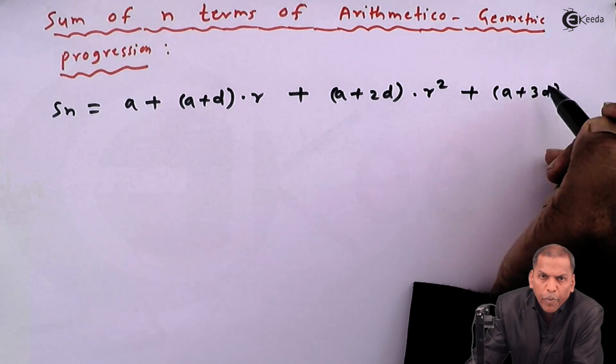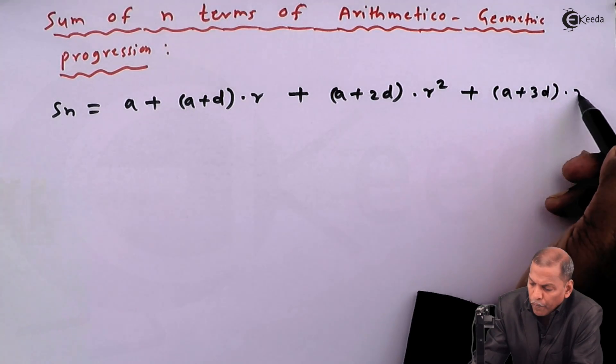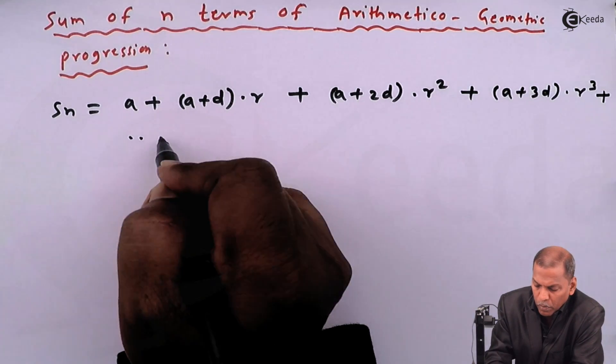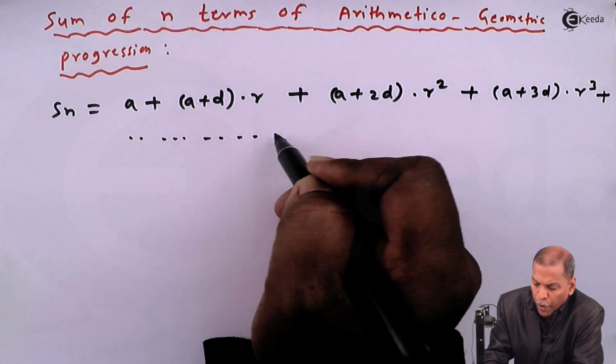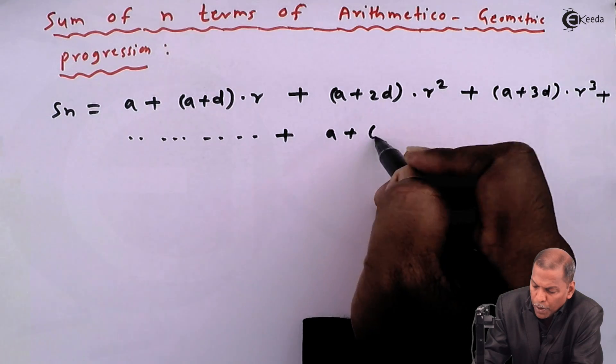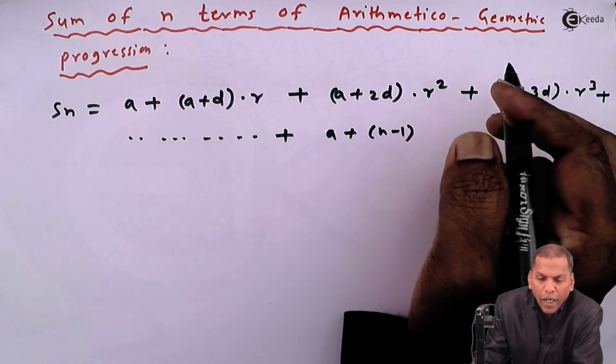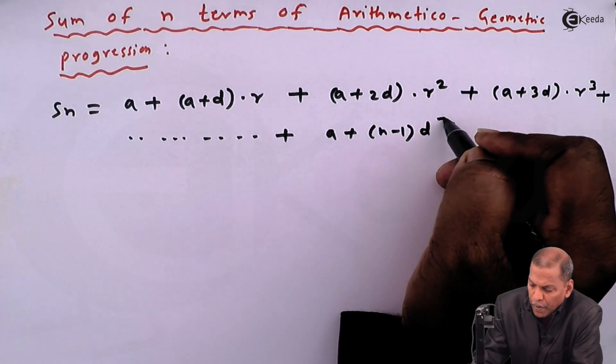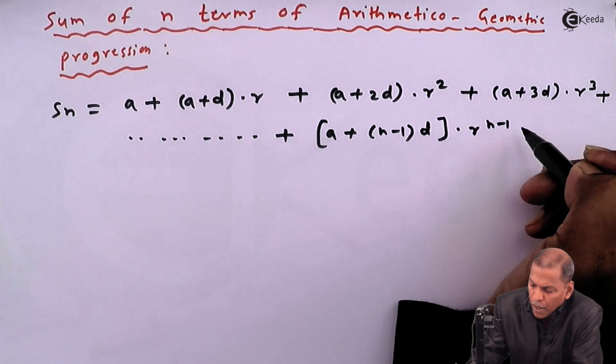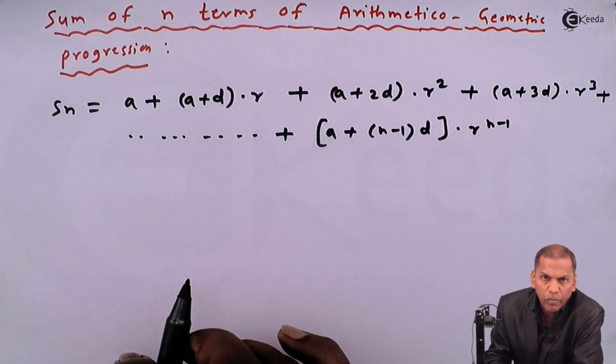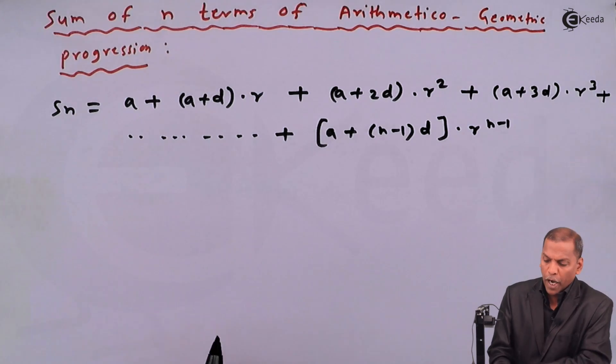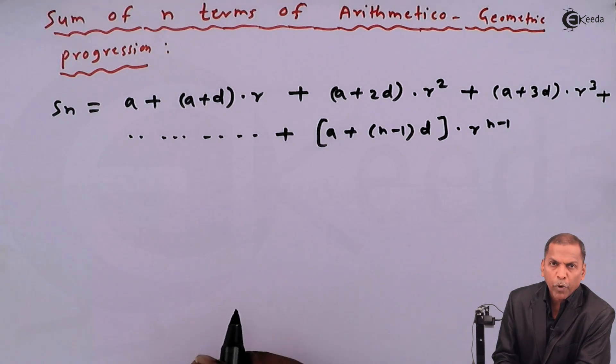(a+3d)·r³ plus going on and the last term is [a+(n-1)d]·r^(n-1). So this is called sum of n terms of arithmetico-geometric progression.